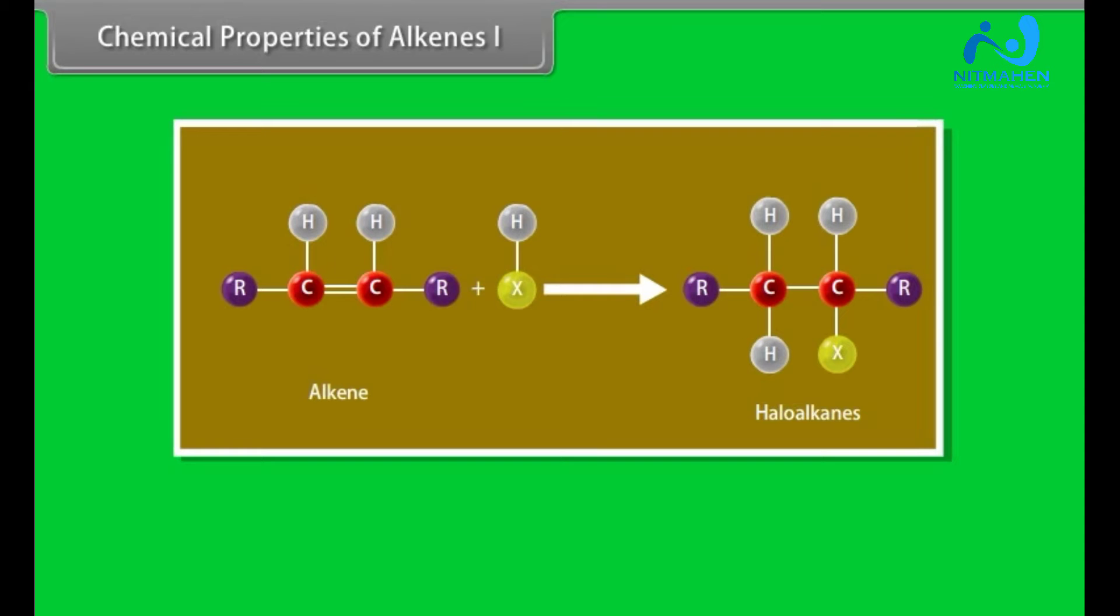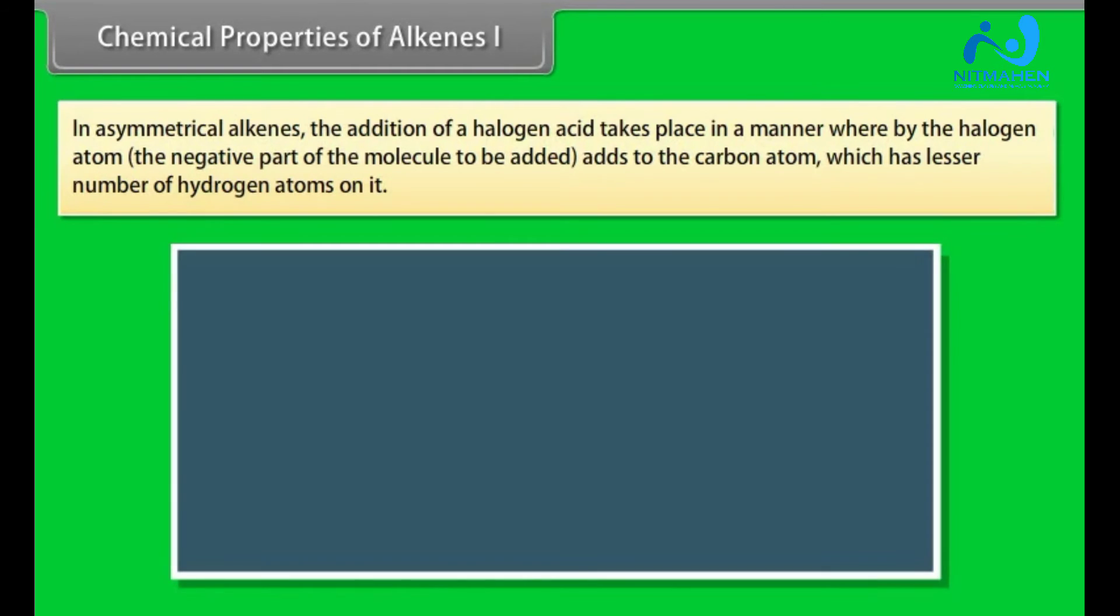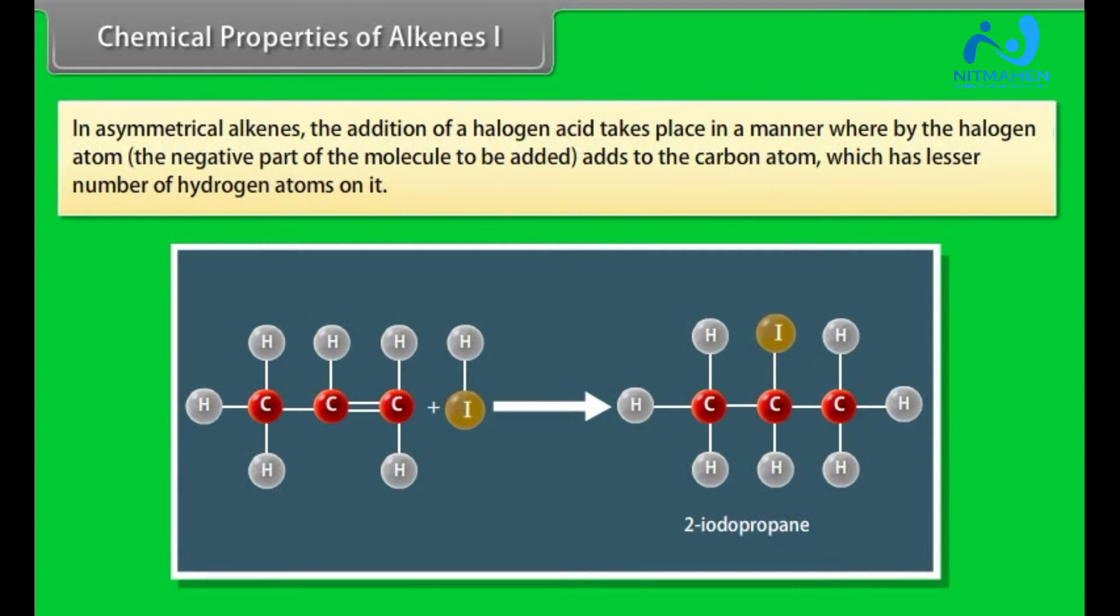Addition of Halogen Acids: Alkenes with concentrated aqueous solution of halogen acids give haloalkanes. The order of reactivity is HI is greater than HBr is greater than HCl. In asymmetrical alkenes, the addition of a halogen acid takes place in a manner whereby the halogen atom, the negative part of the molecule to be added, adds to the carbon atom which has lesser number of hydrogen atoms on it. For example, in the case of propene, the product obtained is 2-iodopropane and not 1-iodopropane. This rule of addition of halogen acids to an asymmetrical alkene is known as Markonikoff's rule.